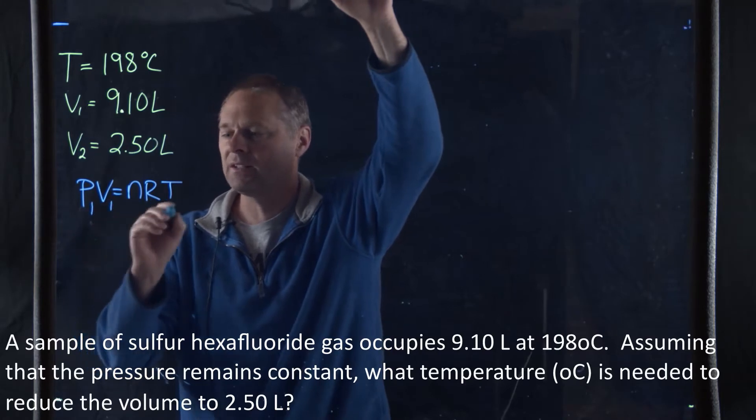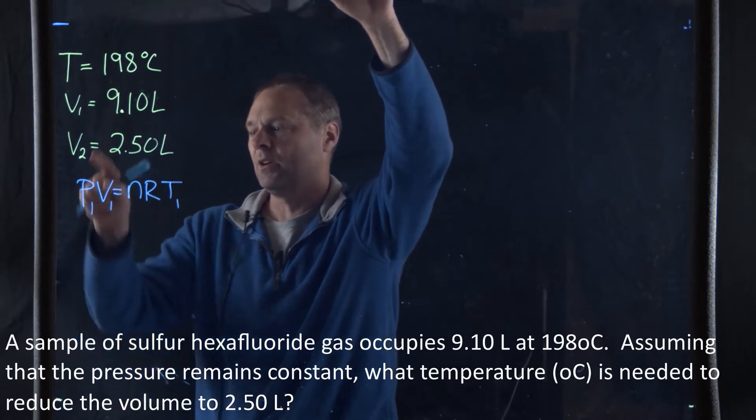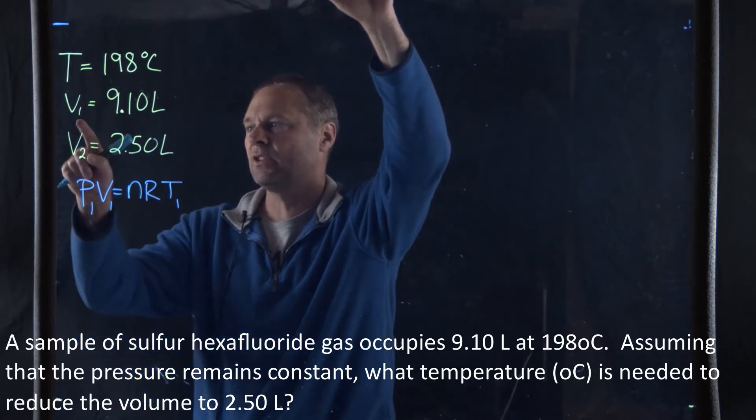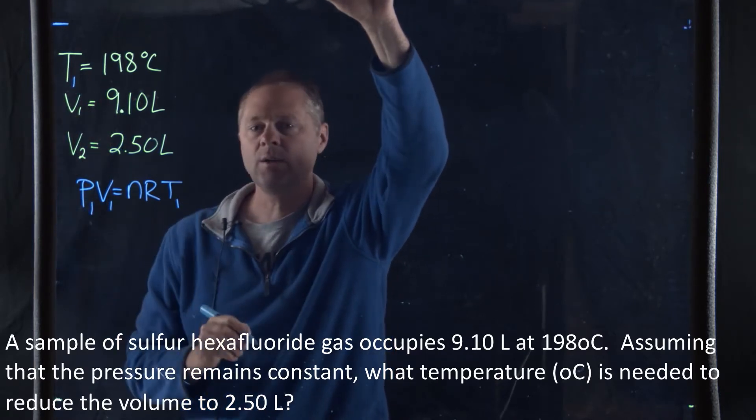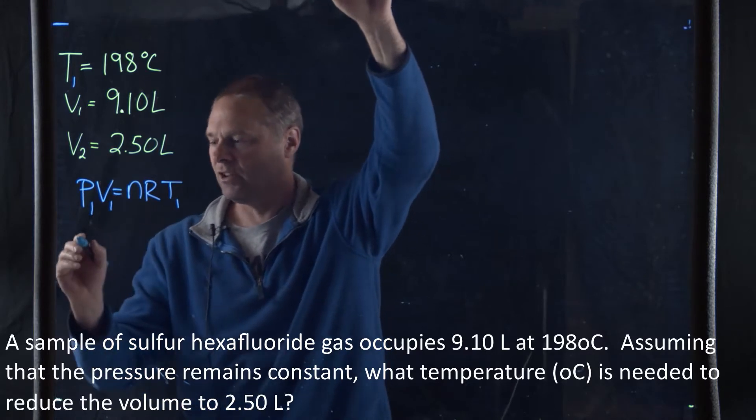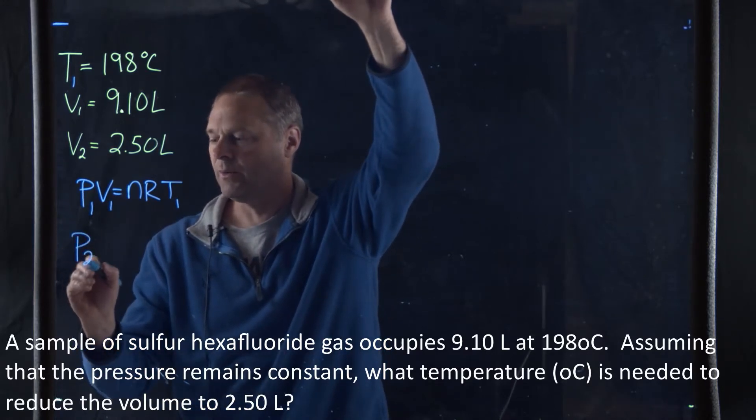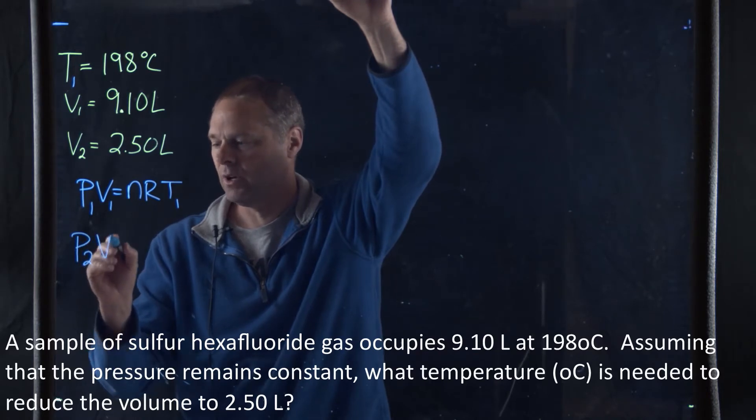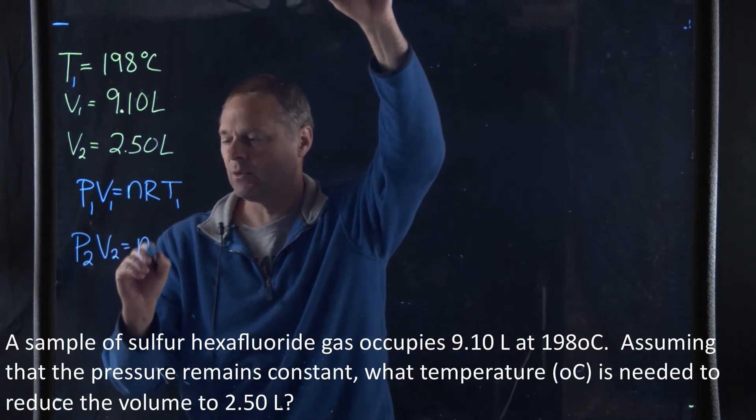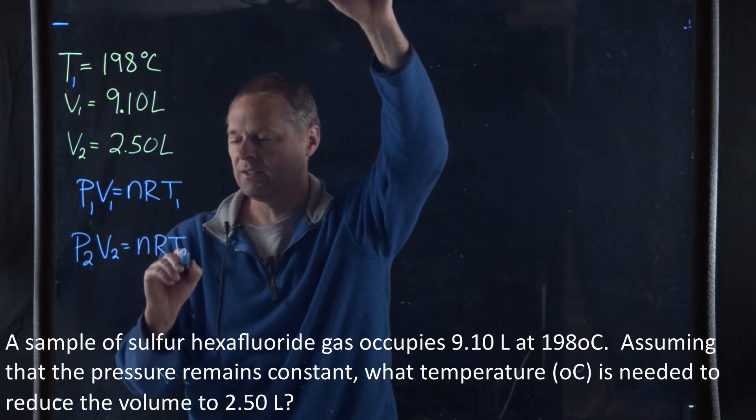1 would represent the initial, so this is going to be V1, and this will be T1. If we change the situation, then we can write the ideal gas law to reflect that. So it would be P2V2 is equal to nRT2.